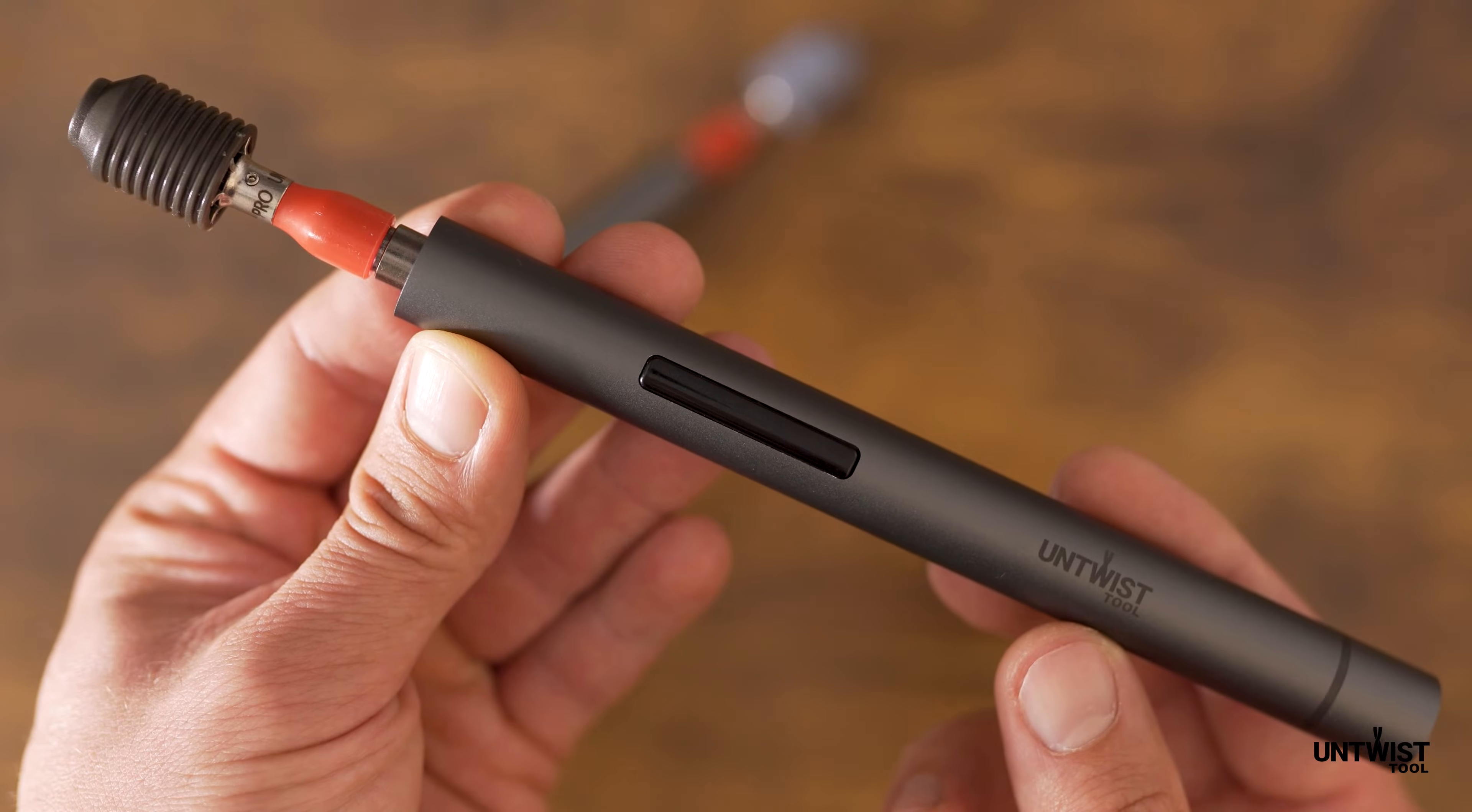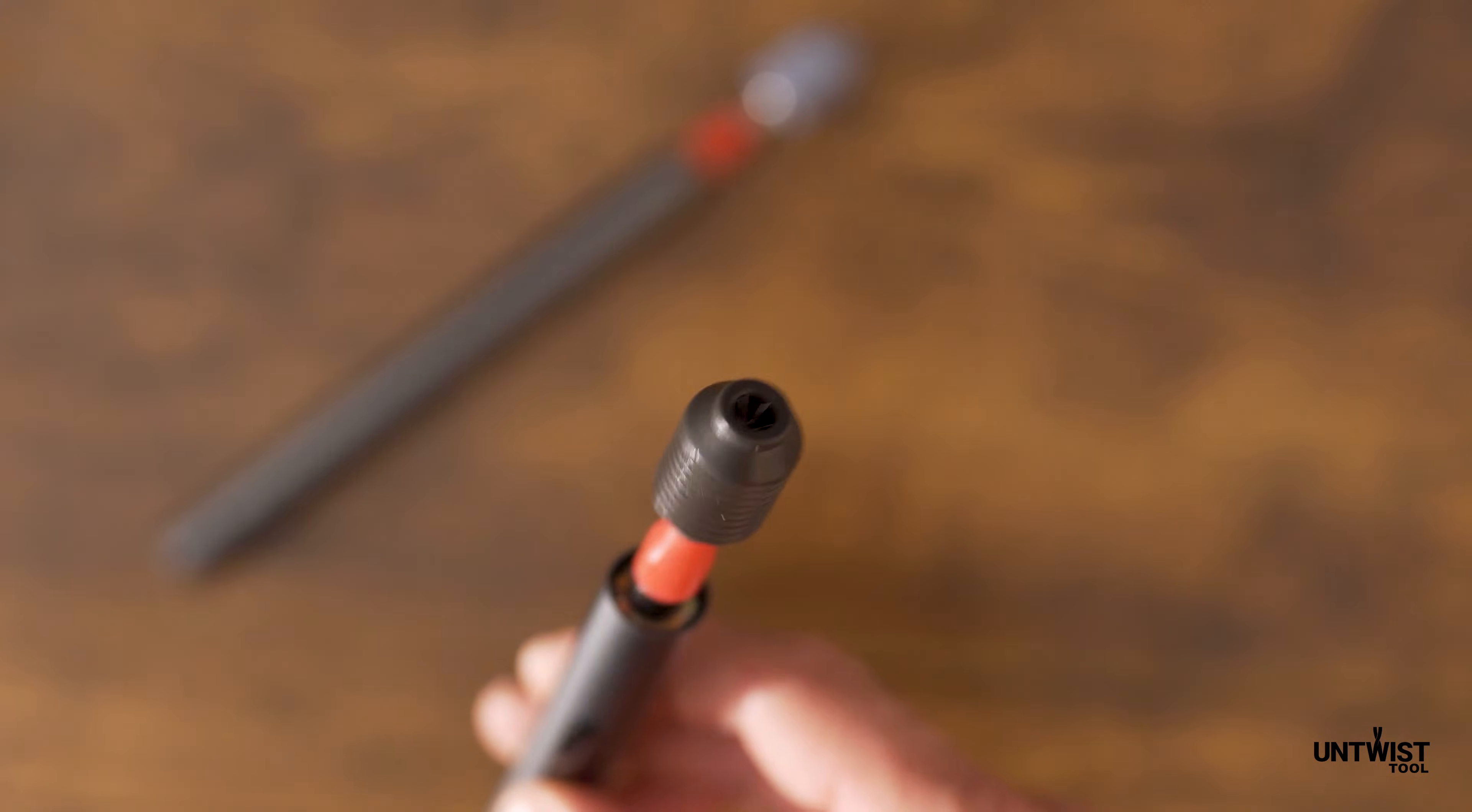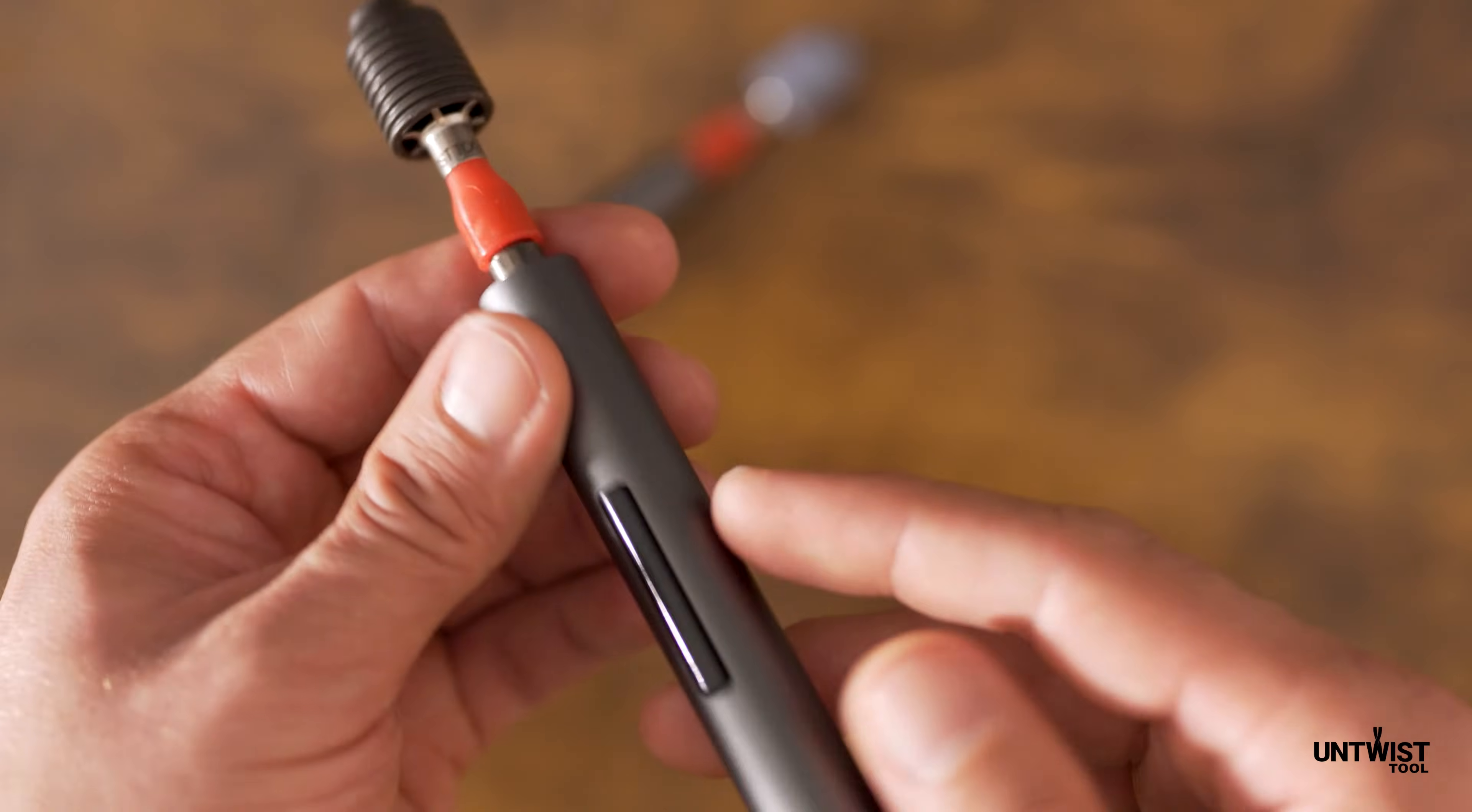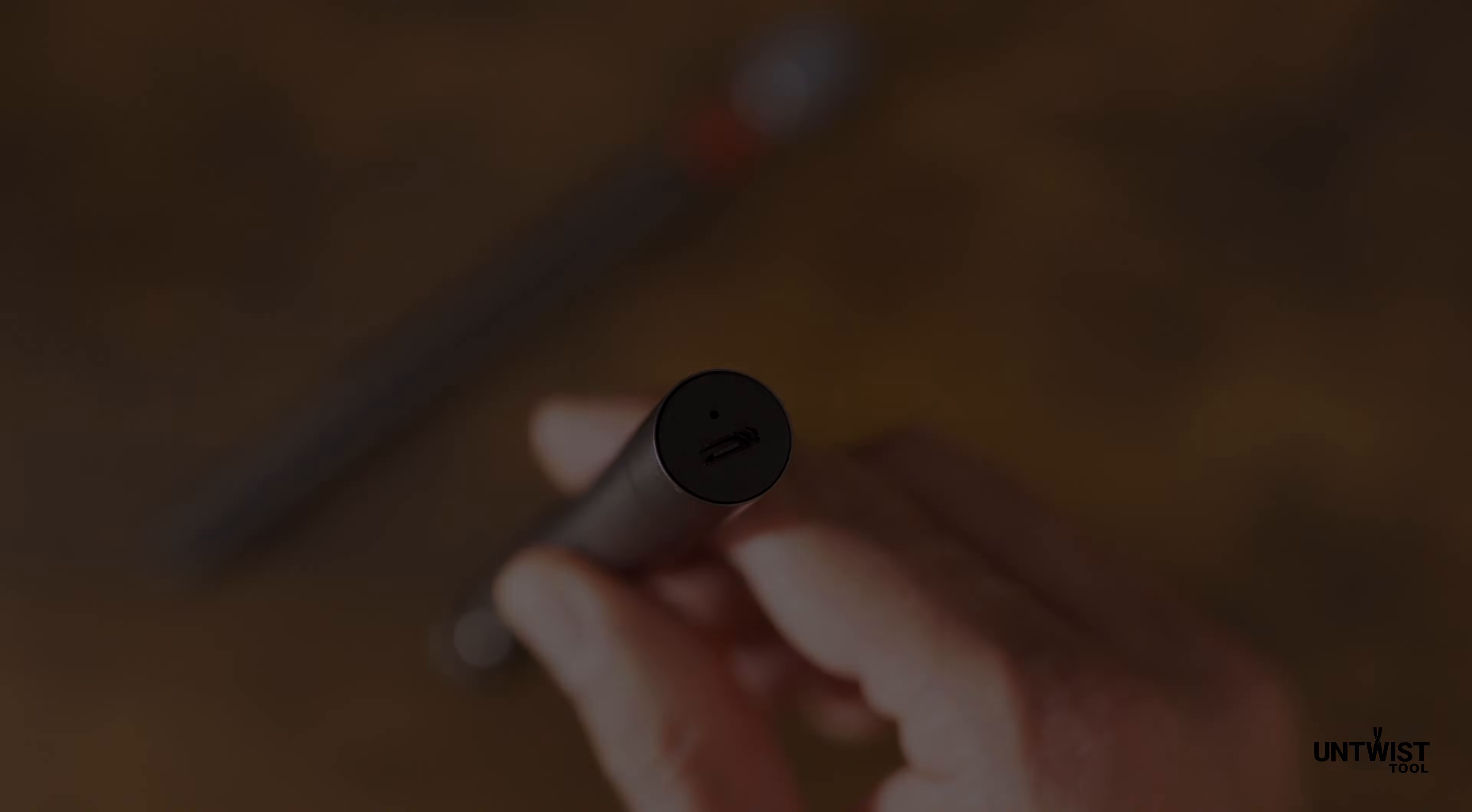The Untwist Tool Pro is powered by a lithium-ion battery that can go through more than 2400 twisted pairs on a single charge. Once the battery is low, it will take about 40 minutes to fully charge via micro USB port.